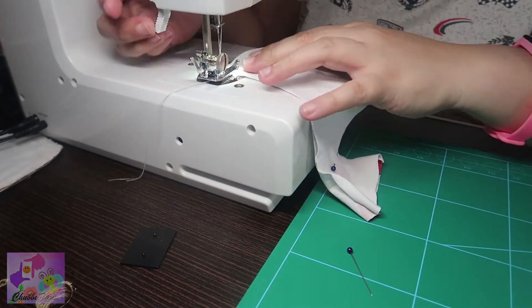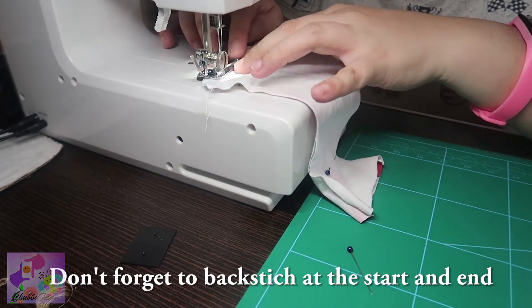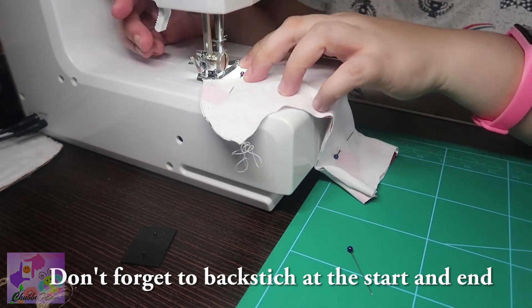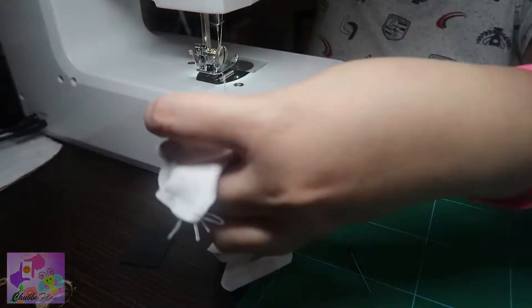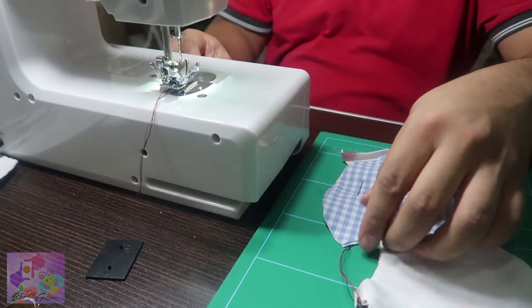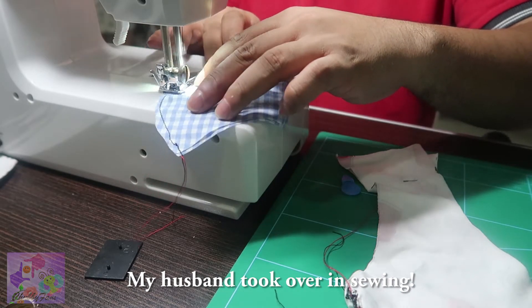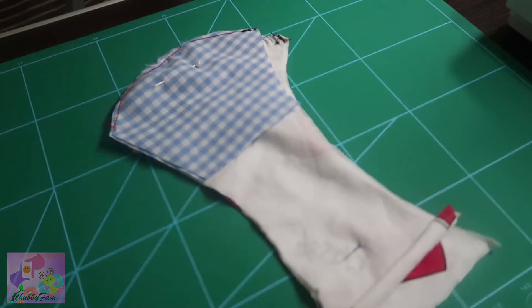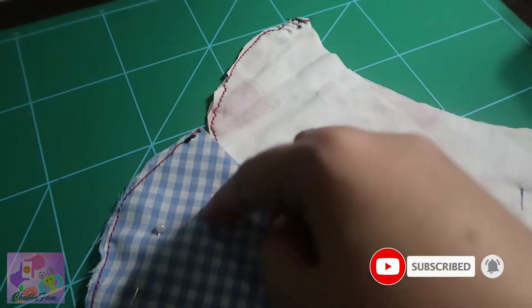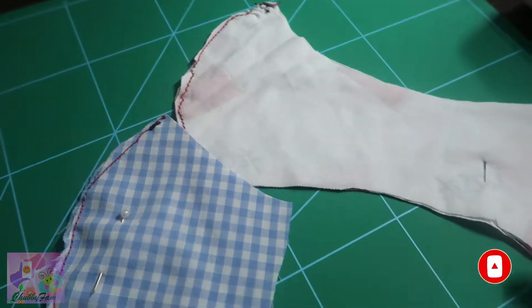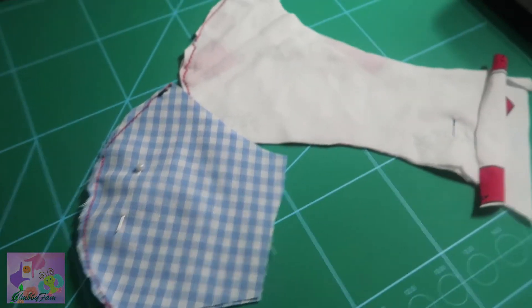This one will be the wrong side, so this is the wrong side, this is the wrong side. We're going to sew this, sew this. Sorry for the color, that's the only thread I have. And then next we're going to sew also this part. I'm going to show you how.